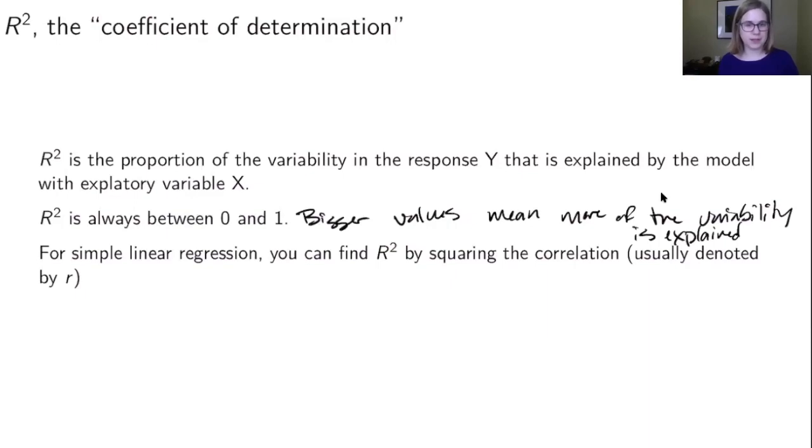And it really depends on the context of the data. How big is good enough? If you have something like earthquakes, if you could explain 10% of the variability in when earthquakes occur, that would probably be pretty good for a lot of scientific purposes. You need an R squared that is closer to 0.8 or 0.9 to be considered a good model.